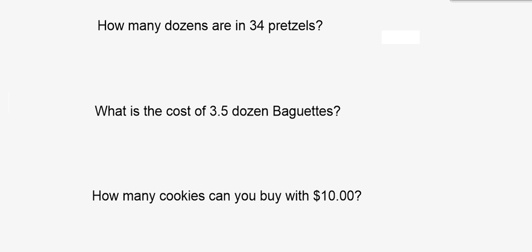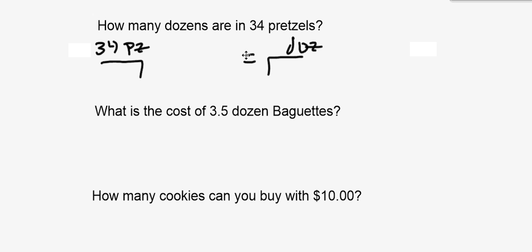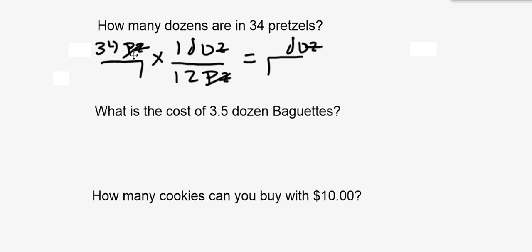Let's take a look at our first question: how many dozens are in 34 pretzels? We can do a bridge method. We put 34 pretzels — I'll abbreviate that as 'pz' — on the left side, and we want to know how many dozen that equals. I know that every one dozen is 12 items, so I'll put one dozen on top and 12 pretzels on the bottom. We then cross off our pretzels.